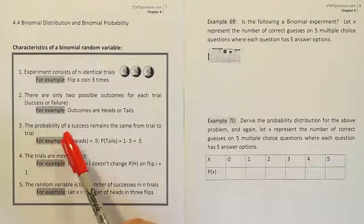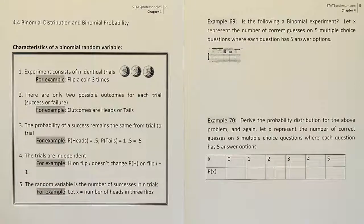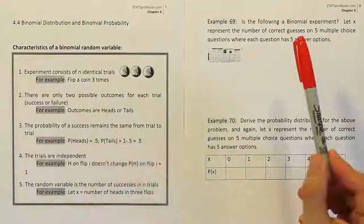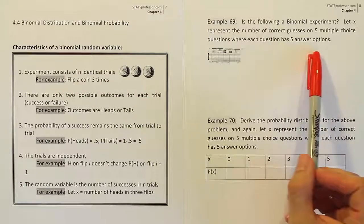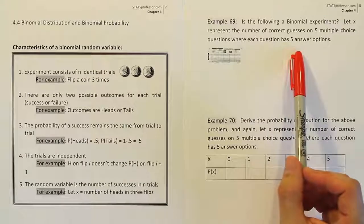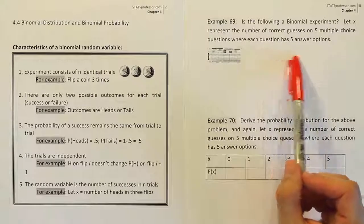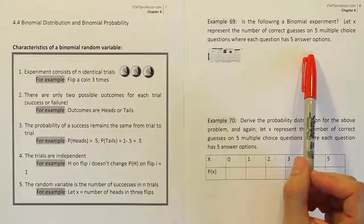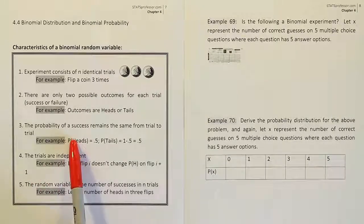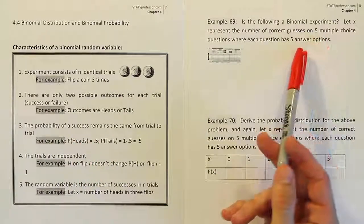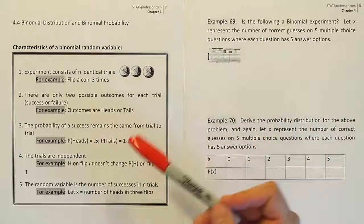Criteria three says the probability of success remains the same from trial to trial. Since every question has five answer options, every question has a one out of five — or 20% — chance of being guessed correctly. If there had been a true/false question mixed in, we'd have a 50-50 chance on that one, which would differ from the 20% for the remaining questions, and we would fail criteria three. But since all five questions have five answer options, every question has the same probability of being guessed correctly. So we meet criteria three.